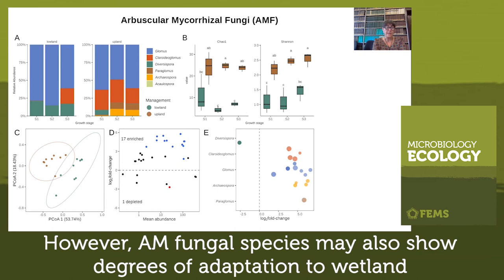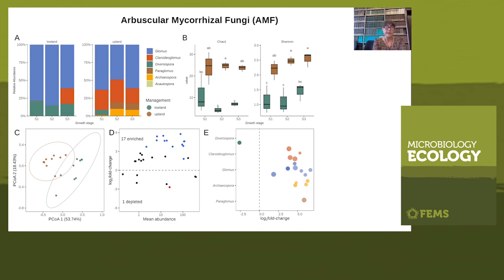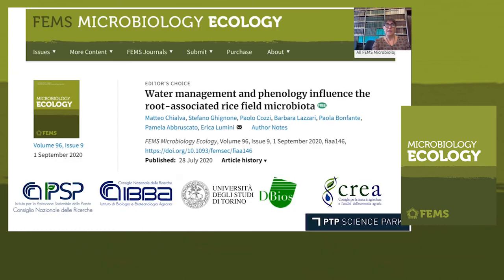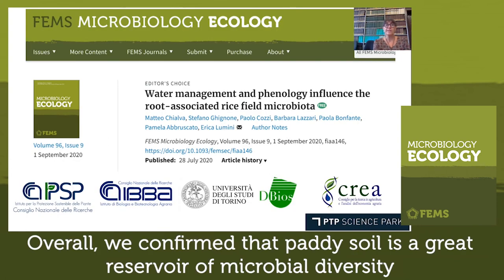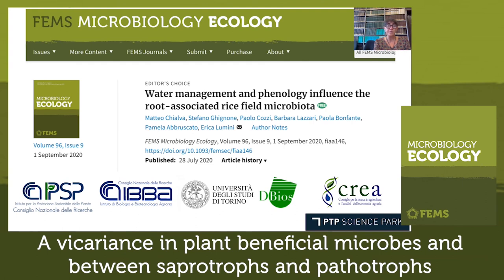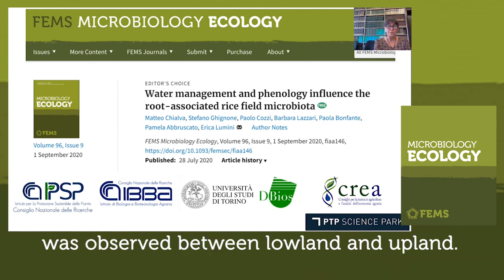However, AMF fungal species may also show degrees of adaptation to wetland conditions, with some phylotypes more competitive than others under hypoxic conditions. Overall, we confirmed that paddy soil is a great reservoir of microbial diversity, and showed that flooding and drying cycles impact the community. A shift between beneficial microbes — saprotrophic versus pathotrophic — was observed between lowland and upland management.